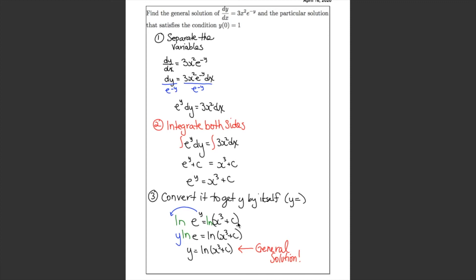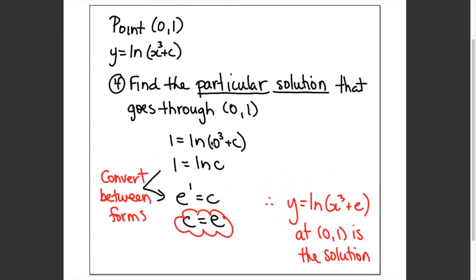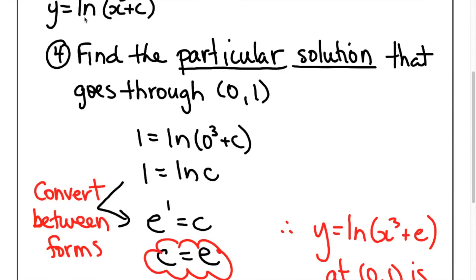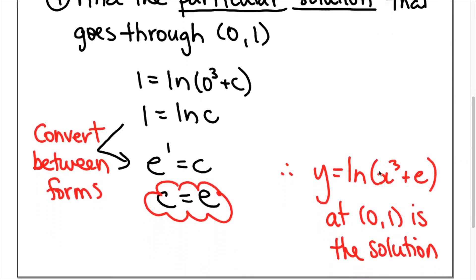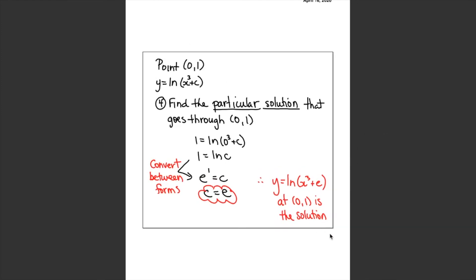Once I have the general solution, I plug in the point to find c. For the particular solution at (0, 1): substituting y equals 1 and x equals 0 gives 1 equals ln c. Converting to exponential form: base e, exponent 1, value c — so e to the power of 1 equals c. Therefore the particular solution is y equals ln(x cubed plus e).